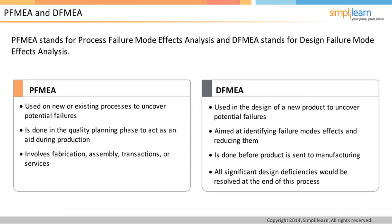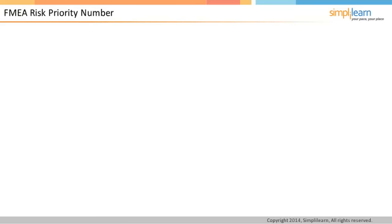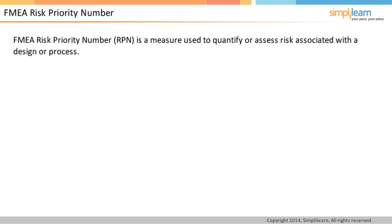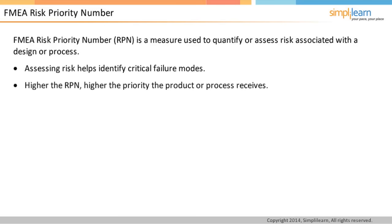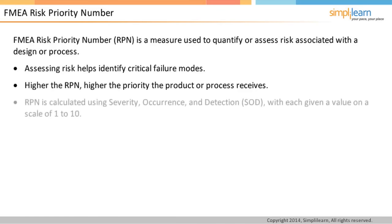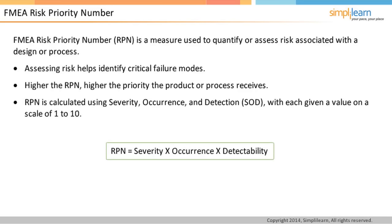FMEA Risk Priority Number, or RPN, is a measure used to quantify risk associated with a design or process. Higher the RPN, higher the priority the product or process receives. RPN is a product of three numbers: severity of a failure, occurrence of a failure, and detectability of a failure, all rated on a scale of 1 to 10. The minimum RPN value is 1 and the maximum is 1000. A high occurrence rating means the failure mode occurs frequently; a high severity rating means the mode is critical to operational safety; and a high detection rating means current controls are not sufficient.